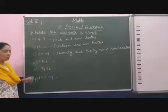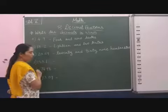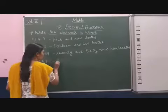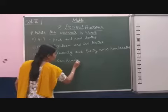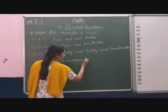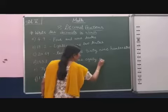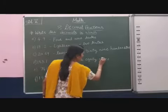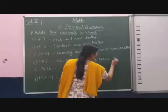Now the next is 183.7. So 183 is the full number. 183 and 7 tenths.